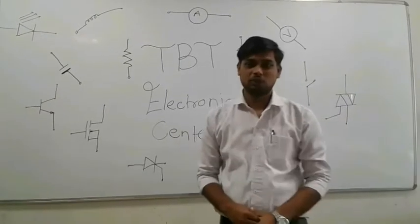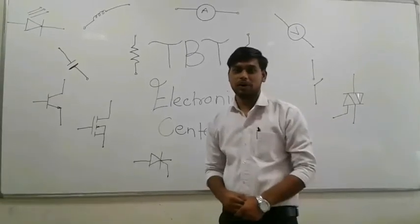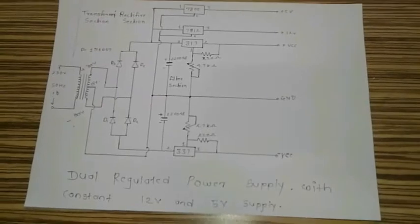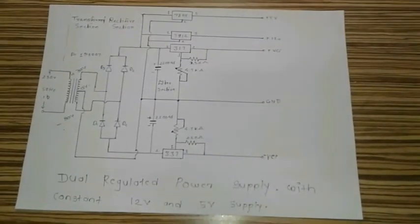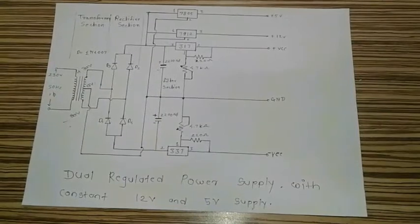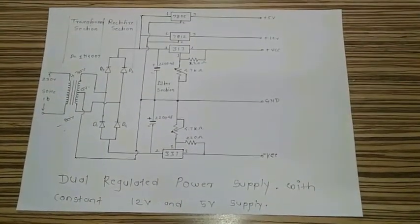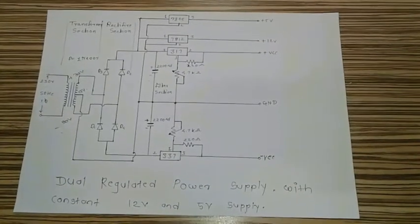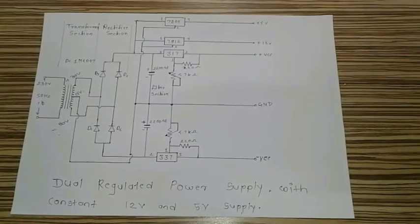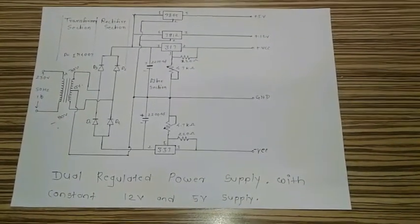We have already seen the component list. So let's start with our circuit diagram of our dual electrical power supply. This is the complete circuit diagram of a dual regulator power supply with constant 12V and 5V supply. This complete circuit diagram is divided into four sections: the transformer section, the rectifier section, the filter section, and the regulator section.